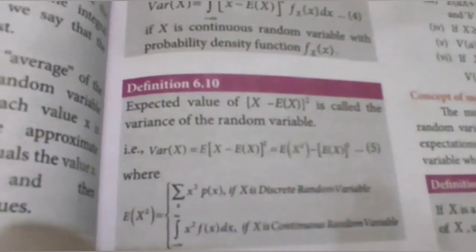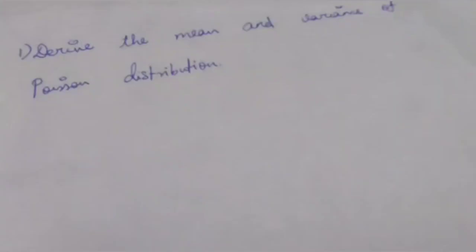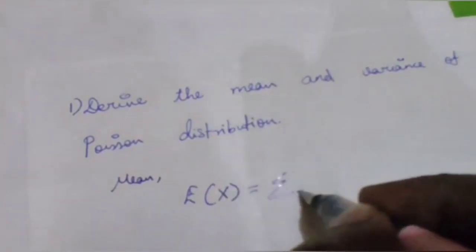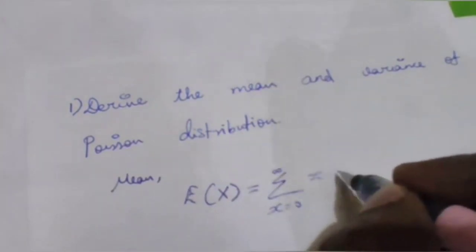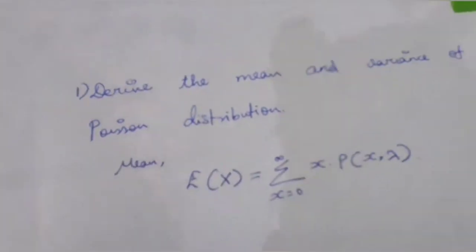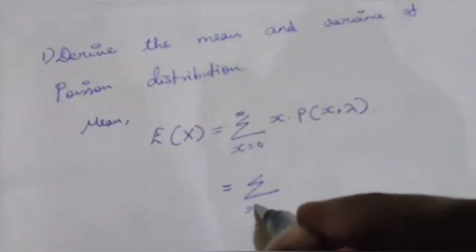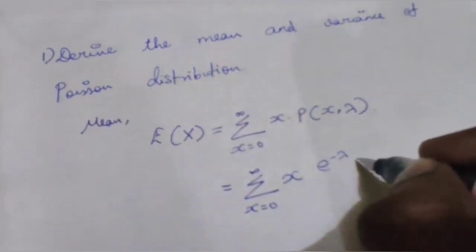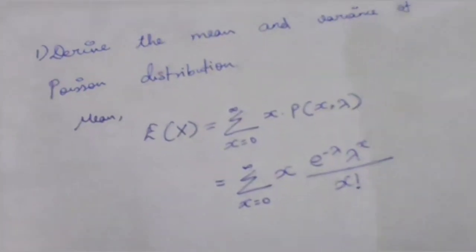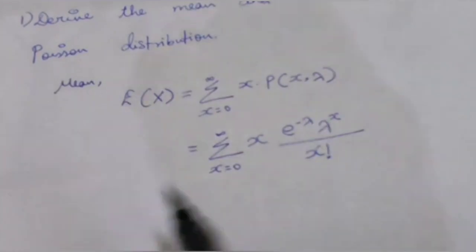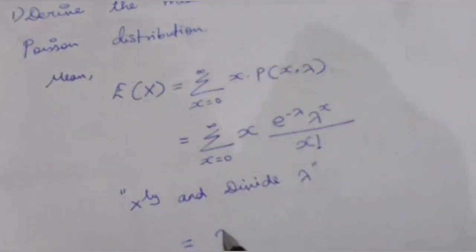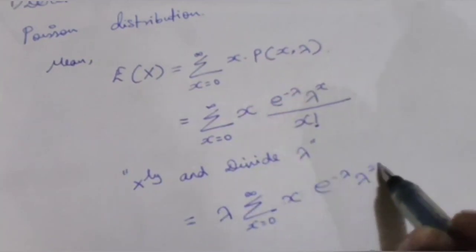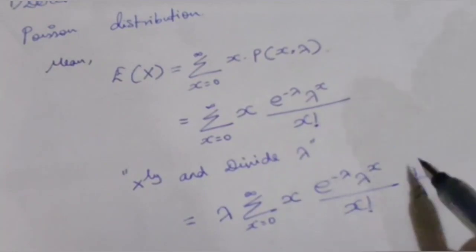We will derive the mean first. We know the expected value definition: E of x is equal to summation from x equals 0 to infinity of x times p of x. Using the Poisson distribution formula, this becomes summation from x equals 0 to infinity of x times e to the power minus lambda times lambda to the power x divided by x factorial.